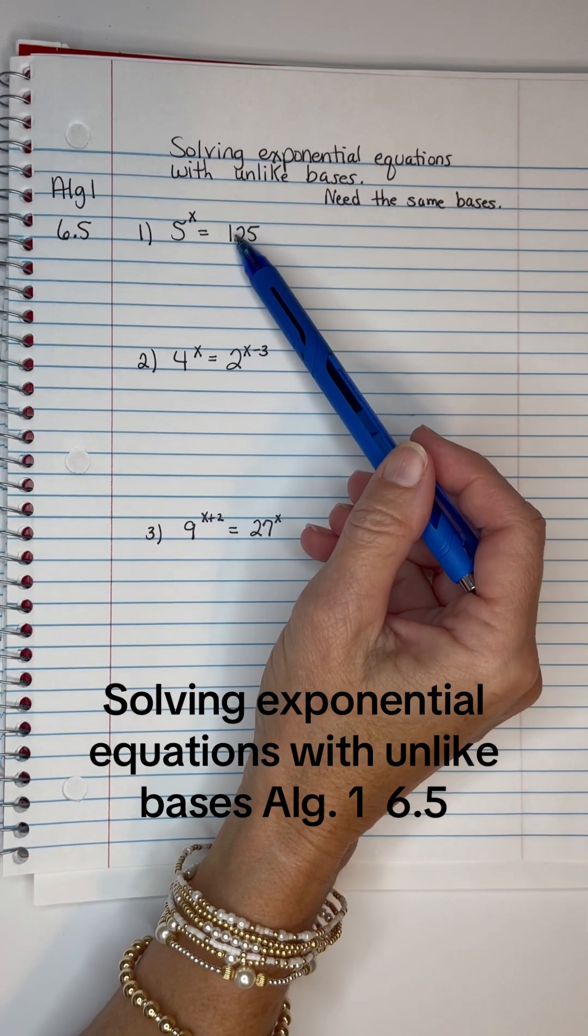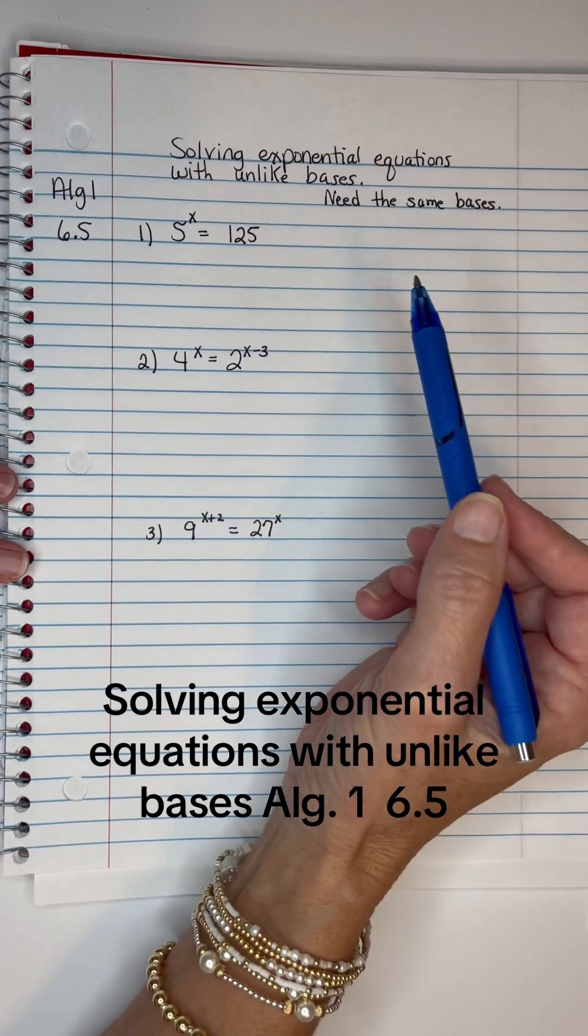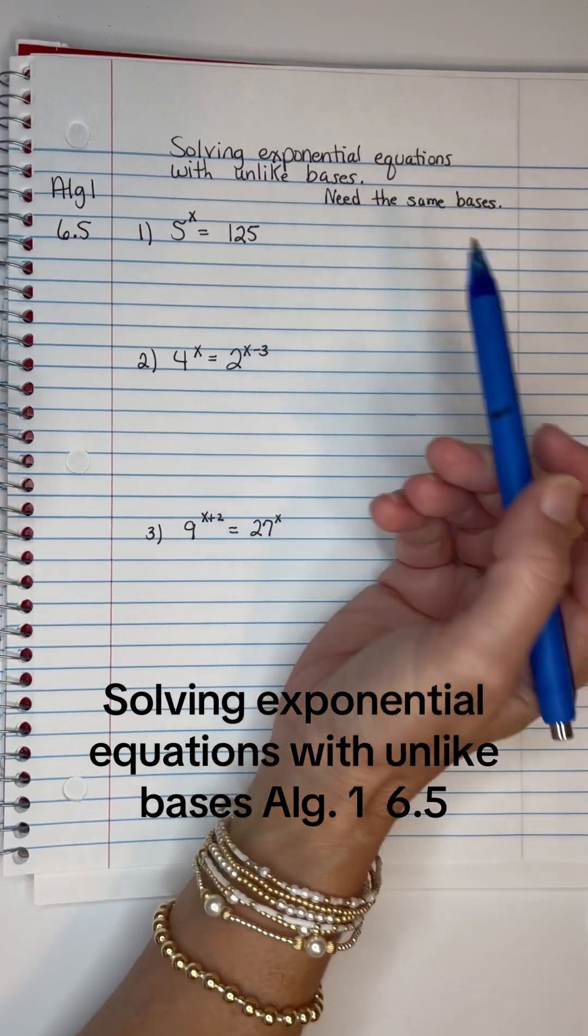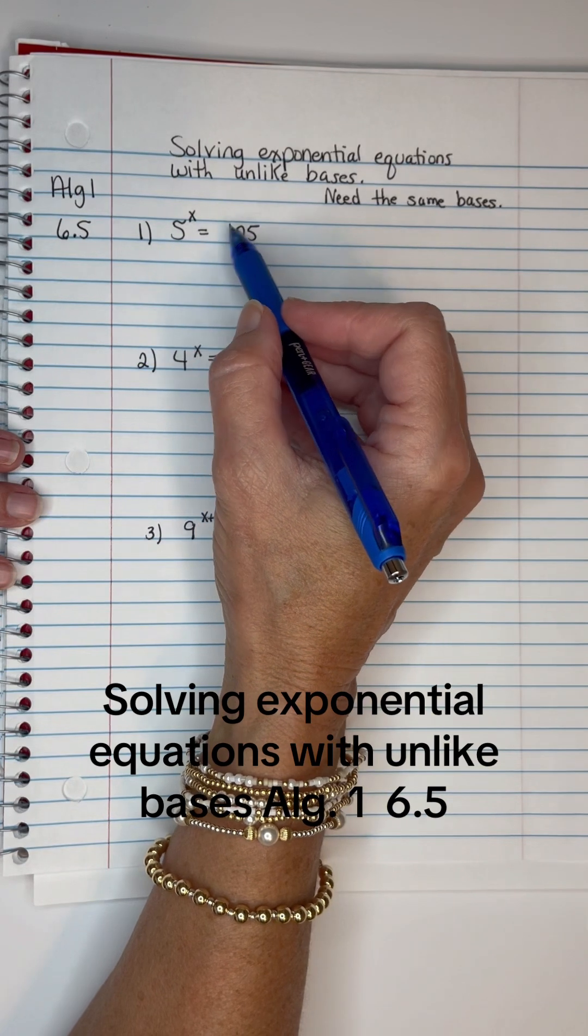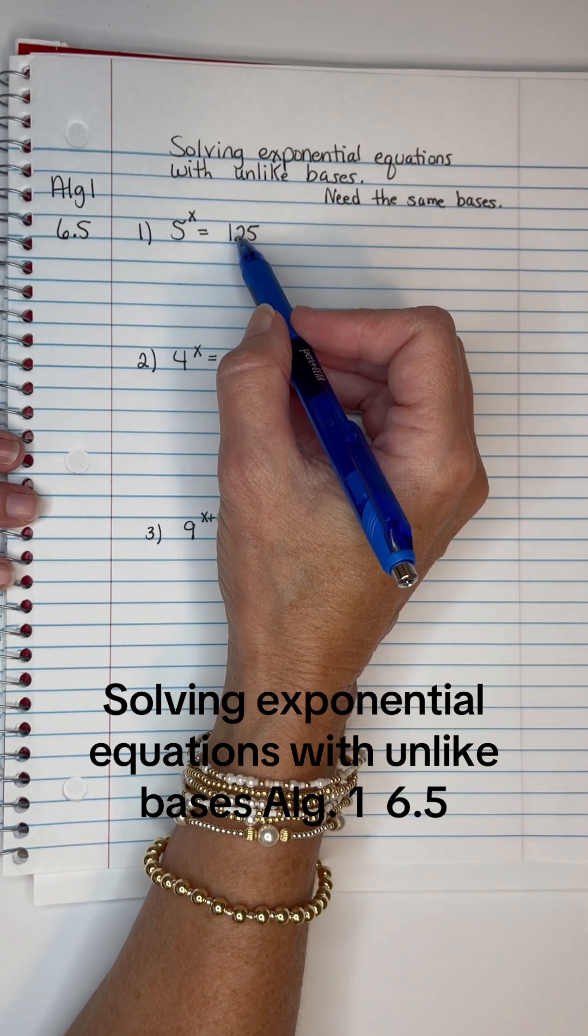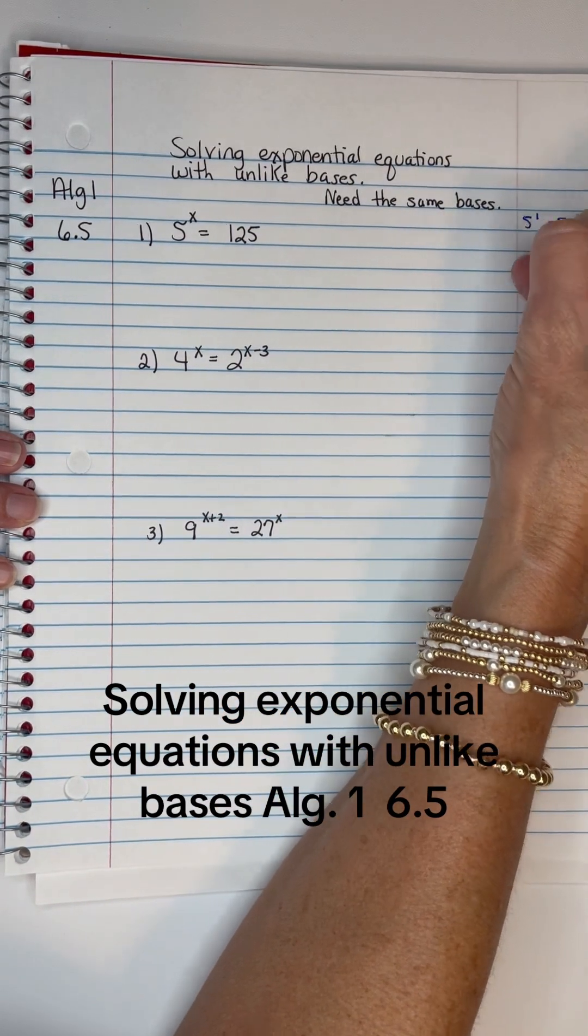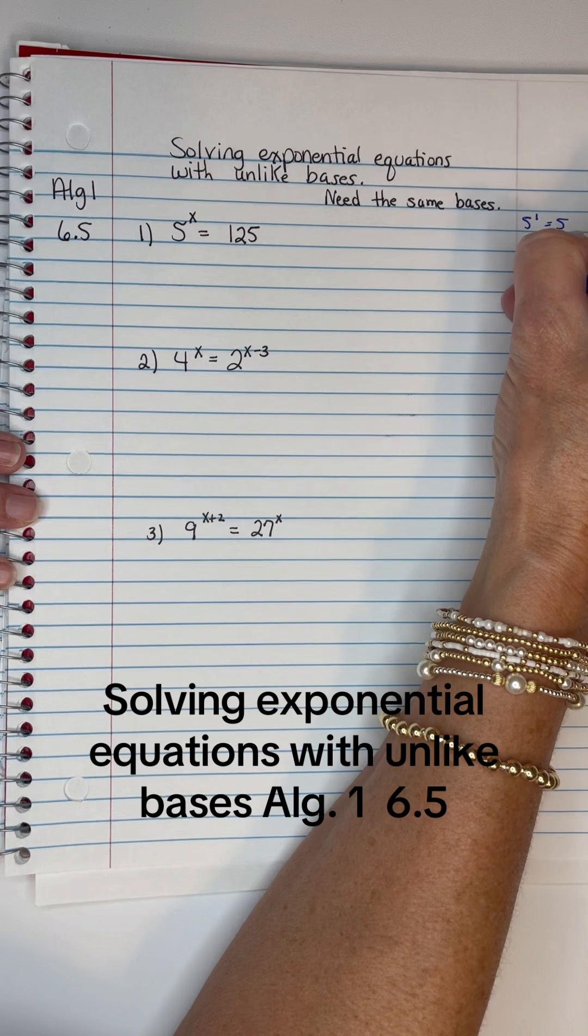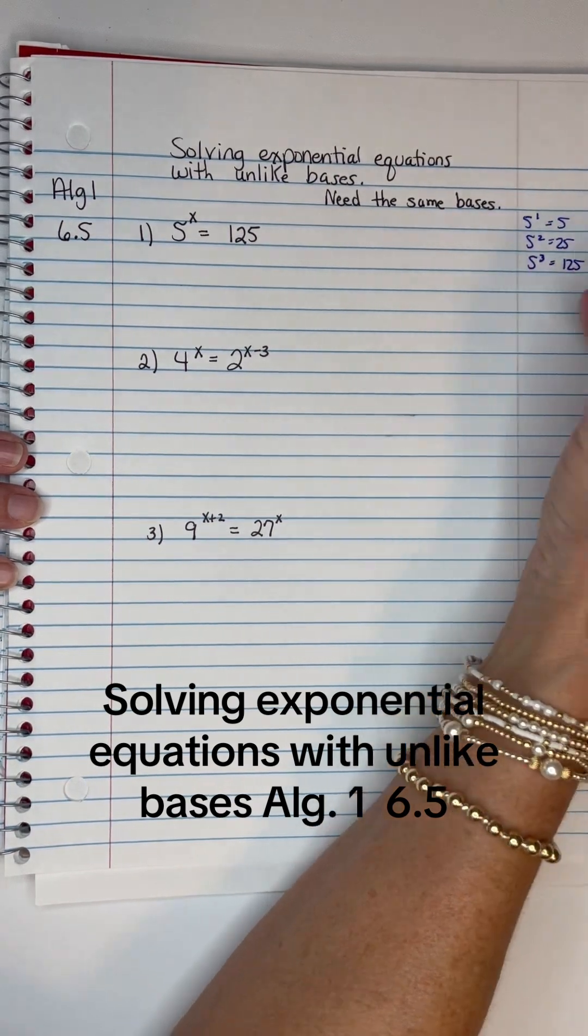So if I can change that 125 to be the base of 5, I can work these problems by setting the exponents equal to each other and solving it. I know I need it to be a 5, and you're thinking, well, 5 to what power is 125? 5 to the first power is 5, 5 to the second power is 25, and 5 cubed is 125.